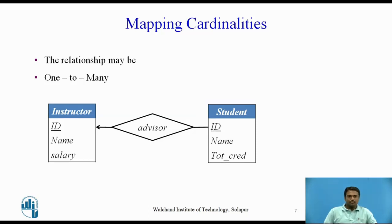In one-to-many mapping, we draw a directed line from the relationship set advisor to the entity set instructor and an undirected line to the entity set student, as shown in the figure. This indicates that an instructor may advise many students, but a student may have at most one advisor.